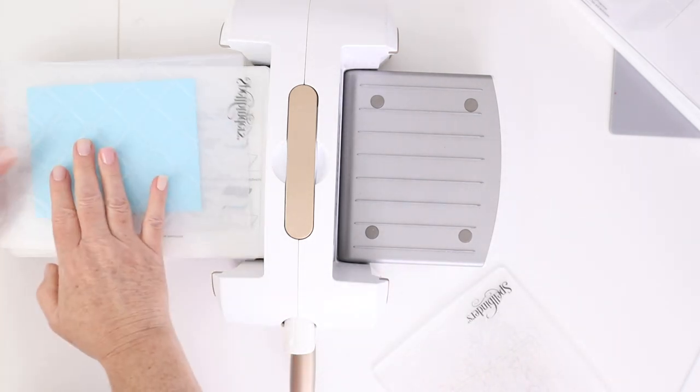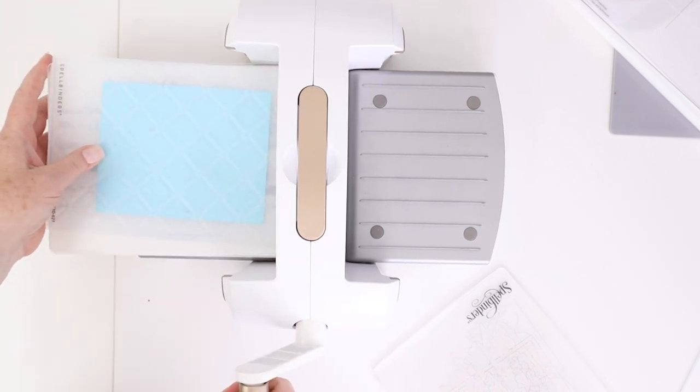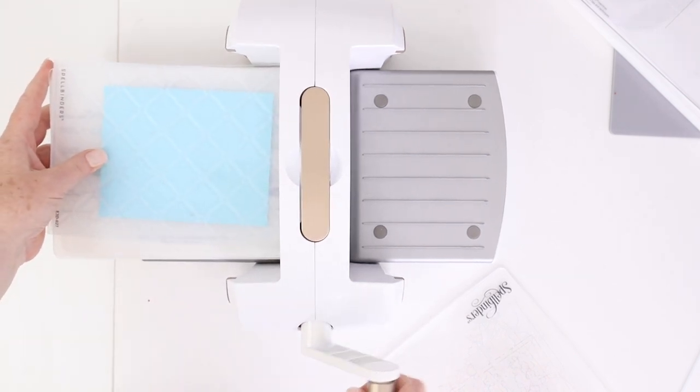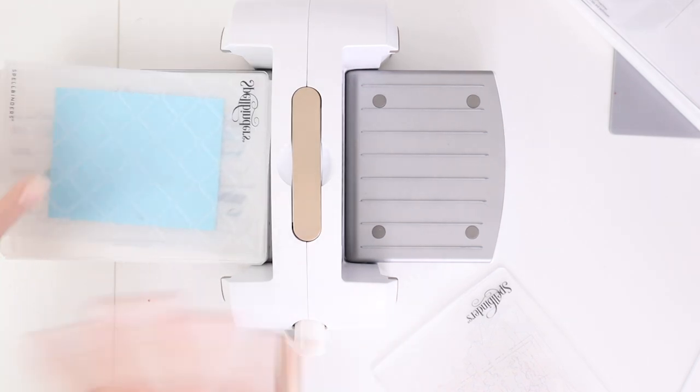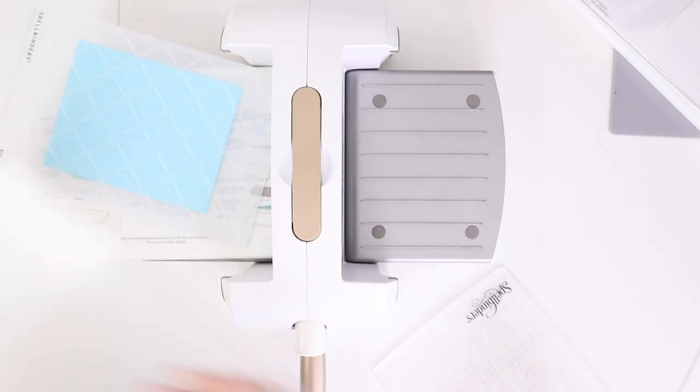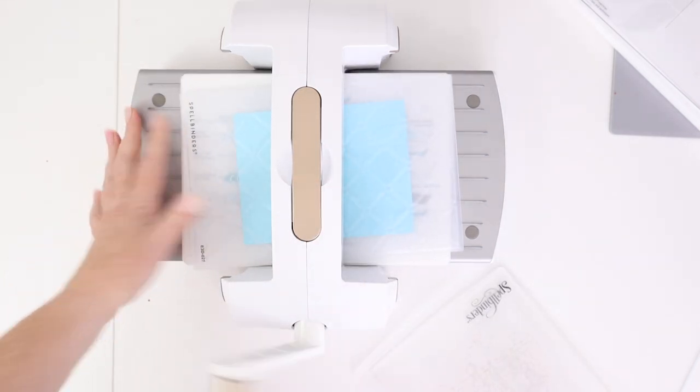On the old platform system, you can see that with the 3D embossing folder in there, it was just too thick to fit through the die cut machine. And you don't want to ever crank the handle if it's not going in. You could break the machine that way for sure.